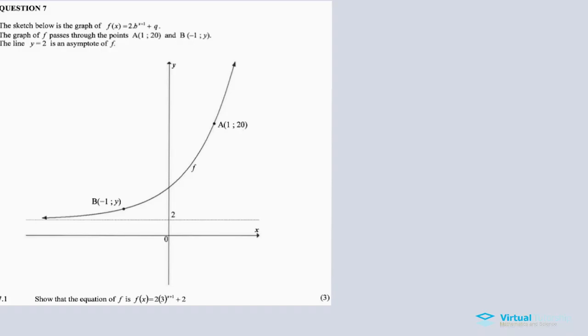Now question 7: The sketch below is the graph of f(x). The graph of f passes through points A and B. The line y equals 2 is an asymptote of f. Question 7.1, show that the equation of f is equal to this: f(x) = 2·b^(x+1) + q. This is the equation we need to show, where q is 2 and b is 3.